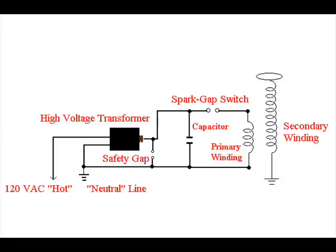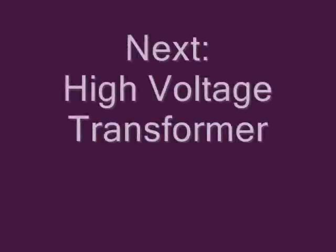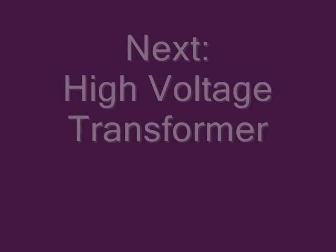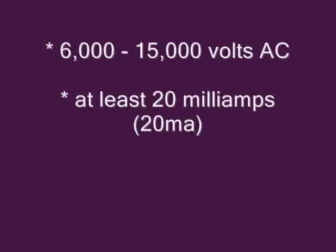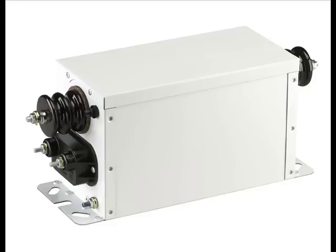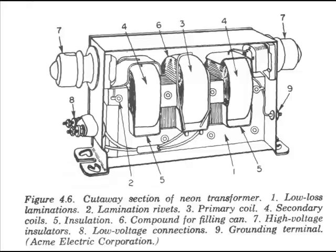Depending on what kind of transformer you use, the circuit may be a little bit different from the one shown in this diagram. You'll need a high voltage transformer, ideally one that can supply at least 6000 volts at 20 milliamps. Most people use a neon sign transformer. These are used to energize a tube in a neon sign and range from about 3000 volts to about 15000 volts. These are actually the best to use because they are designed to work with high voltage and are also current limited, meaning they have built-in safety features called magnetic shunts which automatically regulate the current and prevent overloads.